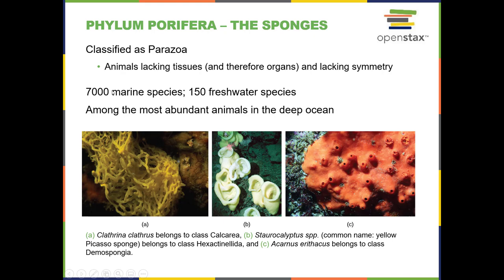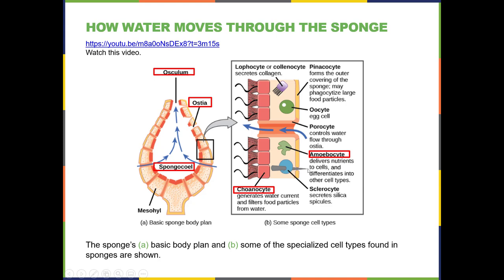There are 7,000 species of sponges — more than the roughly 4,000 species of mammals. Most are marine, living in salt water, with only about 150 species in fresh water. All are aquatic and get their food by filtering water for food particles. They come in many different shapes, colors, and sizes, as shown here in pictures A, B, and C. There is a video linked in the module that shows how water moves through the sponge in the ocean.